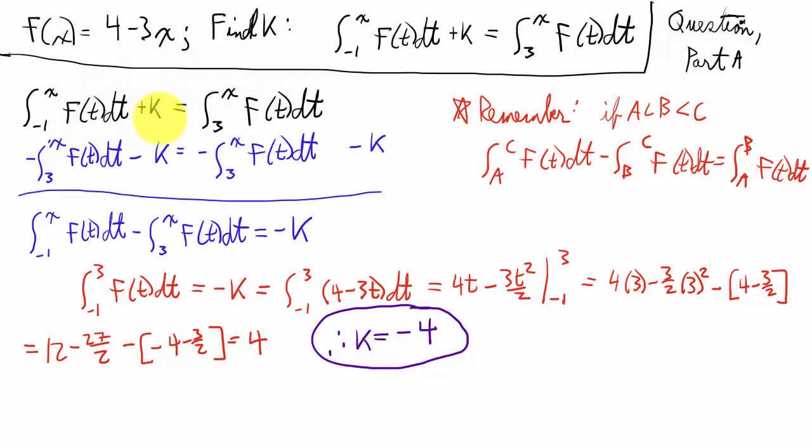Just copying that down, I have this right here. And just remember, if a is less than b and b is less than c, the integral from a to c of f of t dt minus the integral from b to c of f of t dt equals the integral from a to b of f of t dt.